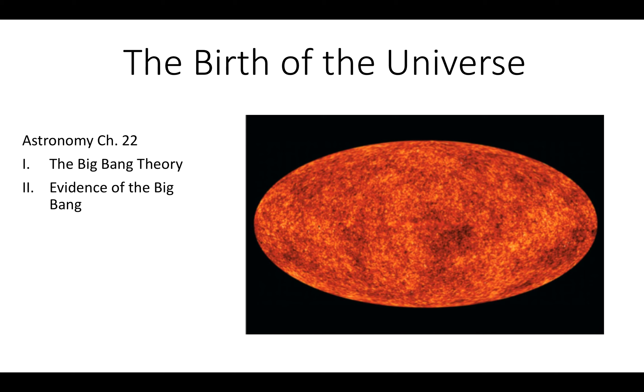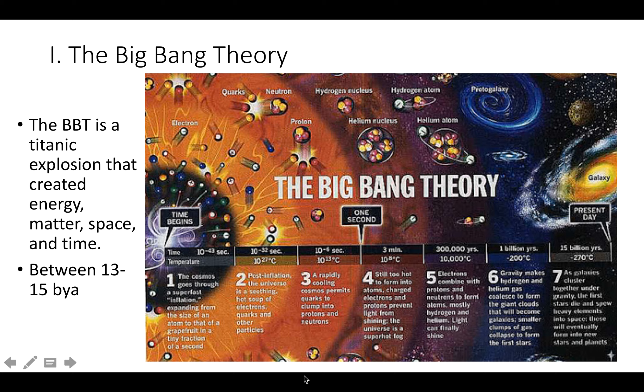On this diagram here, it says the Cosmos goes through a super fast inflation expanded from the size of an atom to that of a grapefruit in a tiny fraction of a second. Step two, post-inflation, the universe is a seething hot soup of electrons, quarks, and other particles. Step three, a rapidly cooling Cosmos permits quarks to clump into protons and neutrons.